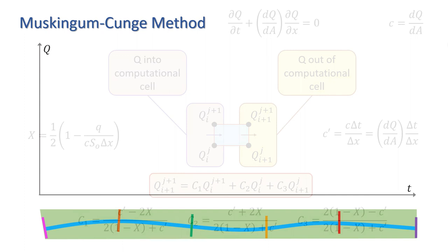For a given initial condition, an inflow hydrograph such as the one shown here, and six points along the reach, this approximation would produce a solution that looks something like this.